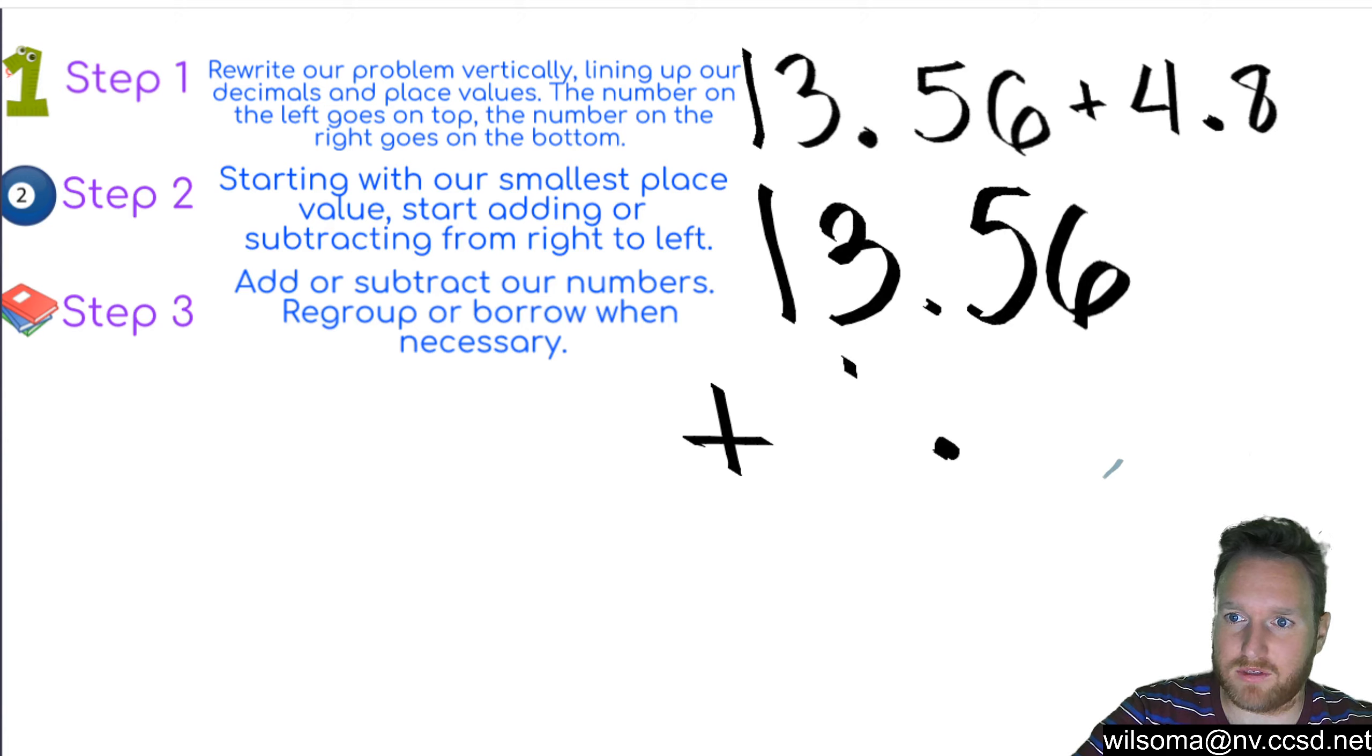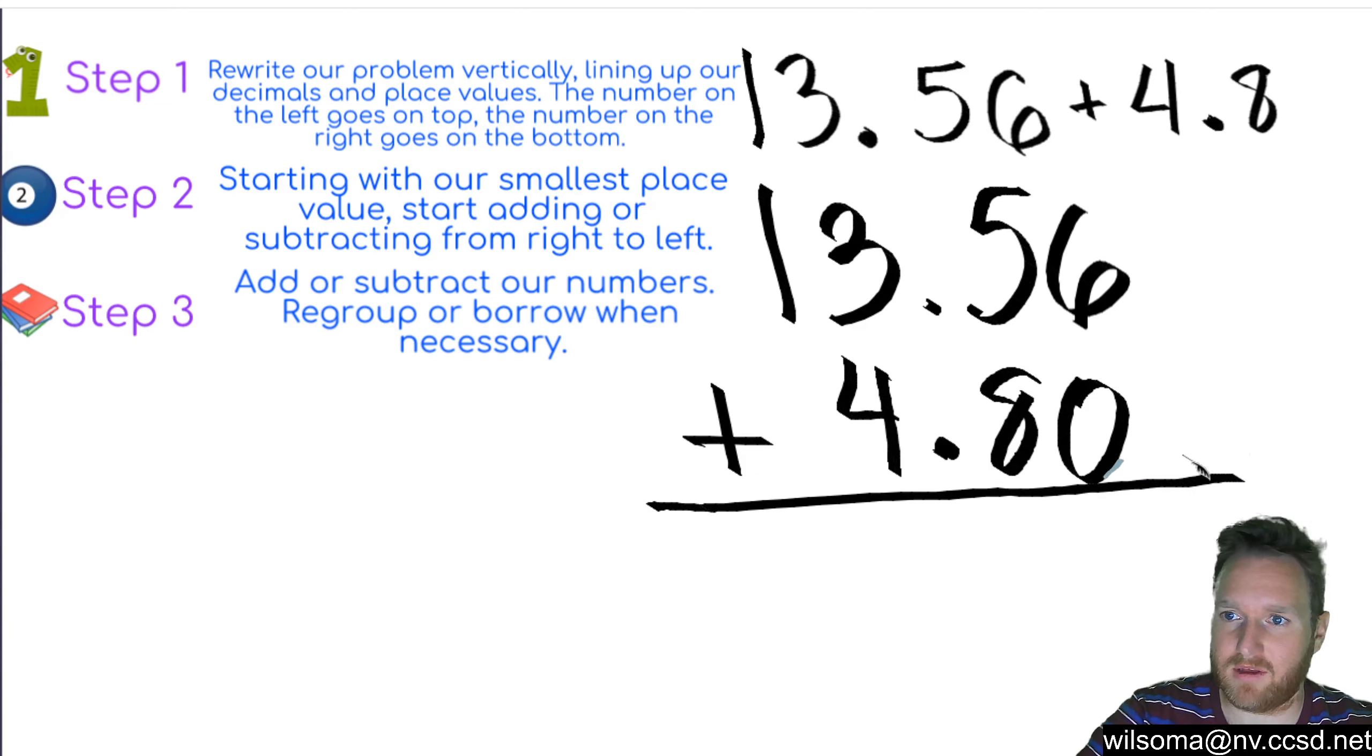So our 4 is going to go over here and our 8 is going to go over here. Now there's nothing in this place value so we could put a zero if we want to. Now we're going to add them together.